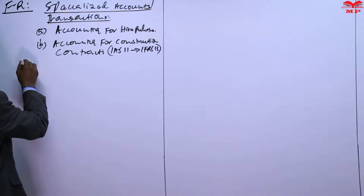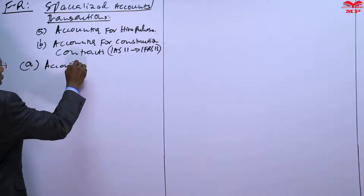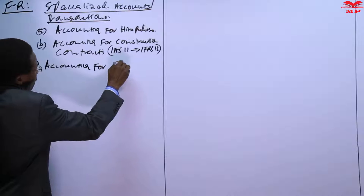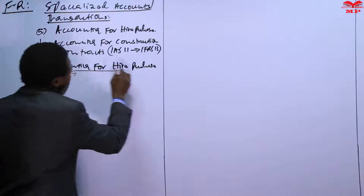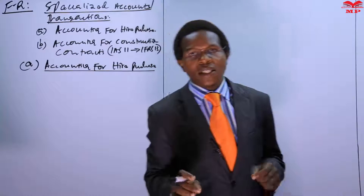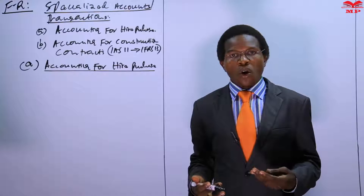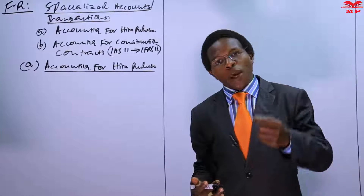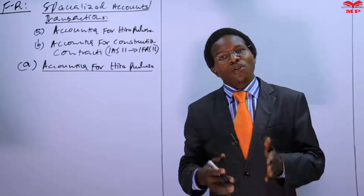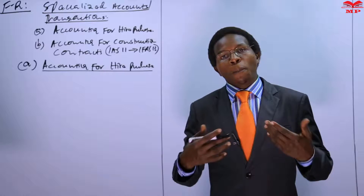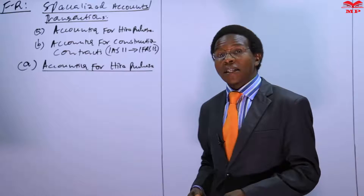Let me start off with hire purchase. When we talk of hire purchase, this is where you sell goods on credit or you buy goods on credit, whereby you pay a down payment known as a deposit, and the balance of the remaining amount will be paid in installments. That is what we have as a hire purchase.